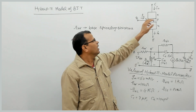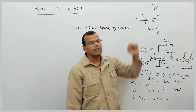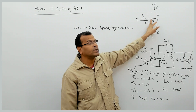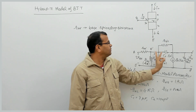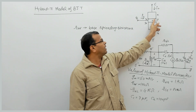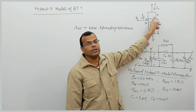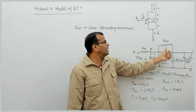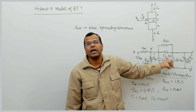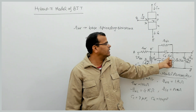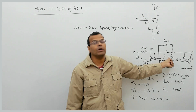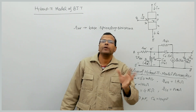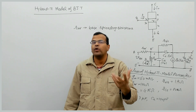On the side between B' and C, we have the collector junction, which offers some capacitance. Between B' and C, we have capacitance CC — the collector junction capacitance. In some textbooks it is denoted Cμ. I will be explaining both notations together so there is no confusion.